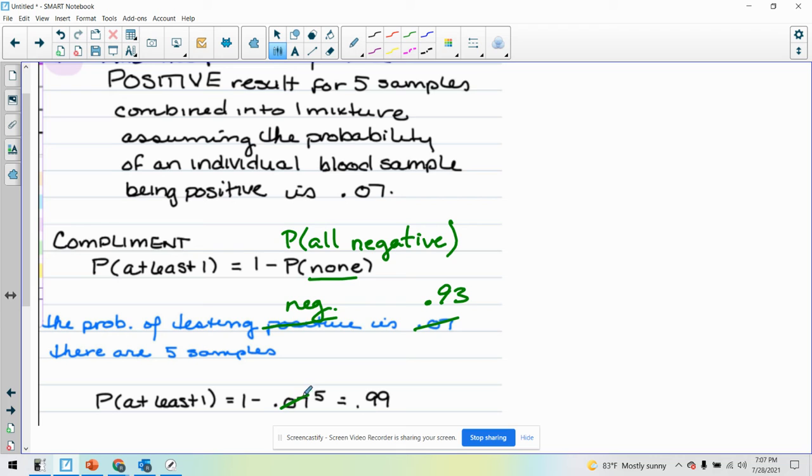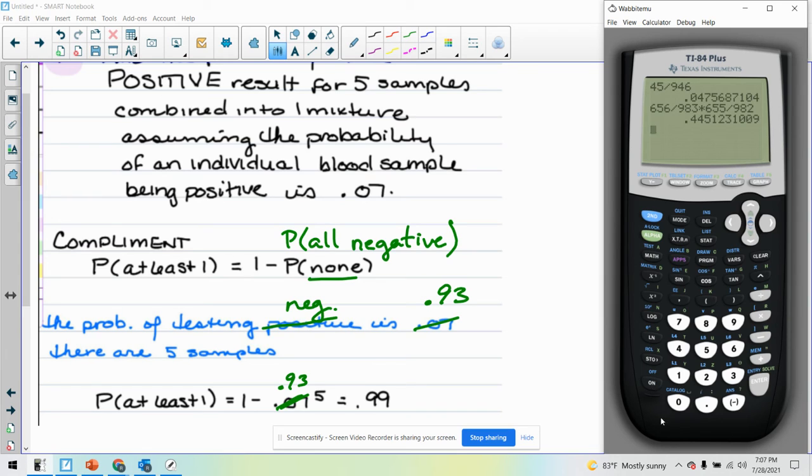So you just needed to replace this with 0.93, so you would get 0.93 to the fifth power, and then we would do one minus that.